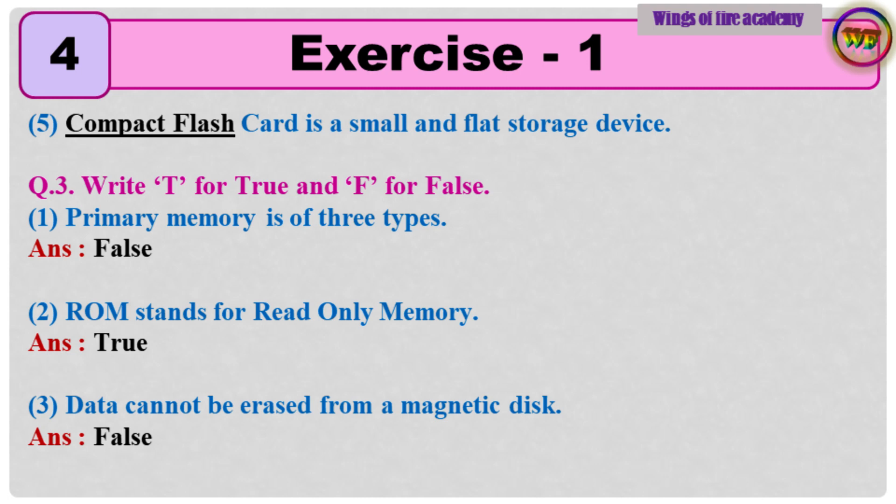Question number 3, write T for True and F for False. 1. Primary memory is of 3 types. Answer: False. 2. ROM stands for Read-Only Memory. Answer: True. 3. Data cannot be erased from a magnetic disk. Answer: False.